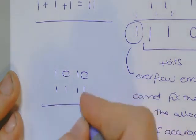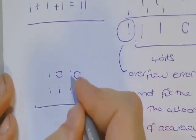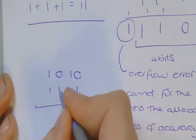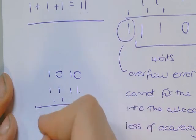1 plus 1 is 0, carry the 1. 1 plus 1 is 0, carry the 1. Then you've got 1, 1, 1, which is 11.